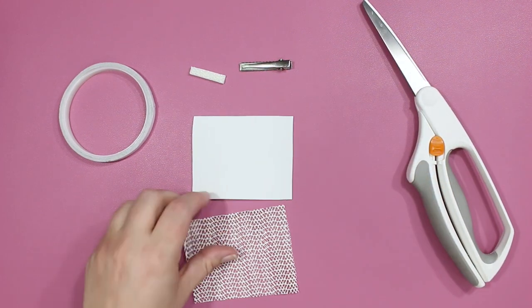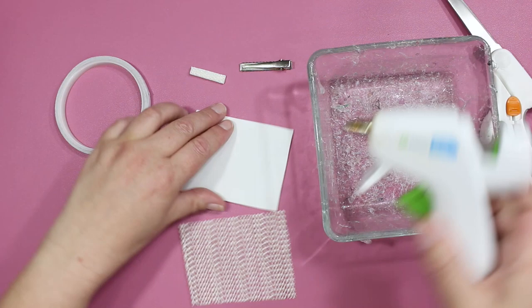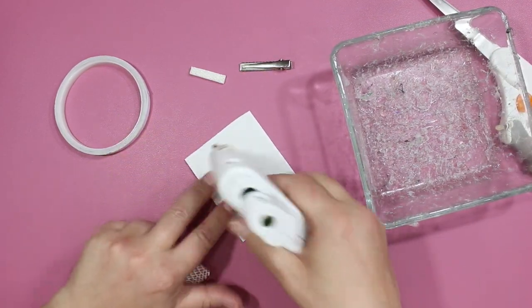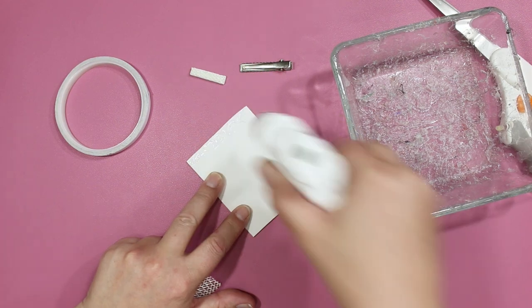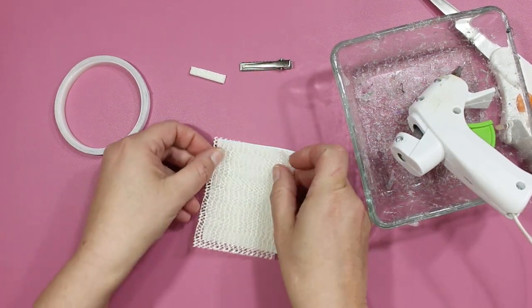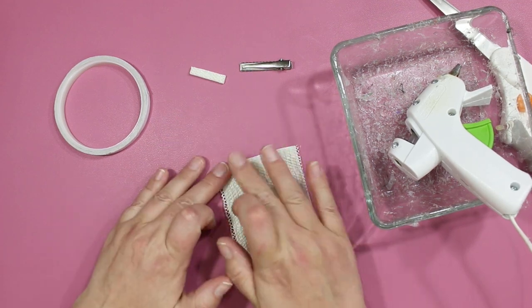All right, the first thing we're going to do is we're going to hot glue our shelf liner to the foam sheet. So get out your hot glue gun and just start putting some hot glue onto it and tack your shelf liner onto it, and then do that all the way down.